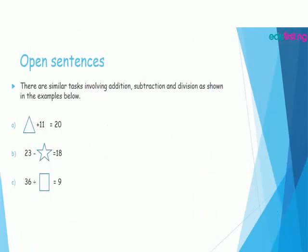There are similar tasks involving addition, subtraction, and division, as shown in the examples below. Triangle plus 11 equal to 20, 23 minus star equal to 18, 36 divided by rectangle equal to 9.